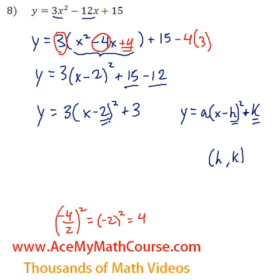So in this case our h is positive 2. Because that way since we have minus h, it's minus 2 over here. So h is 2. And that's the x coordinate of the vertex.